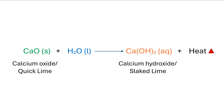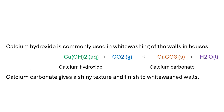Calcium oxide (CaO) reacts with water (H2O) to form calcium hydroxide (Ca(OH)2). The reaction is exothermic and releases heat. Since only one product, calcium hydroxide, is formed, this reaction can be classified as a combination reaction. Calcium hydroxide is commonly used in whitewashing of walls in houses. In fact, the major component of water-based distemper paints is calcium hydroxide or slaked lime.